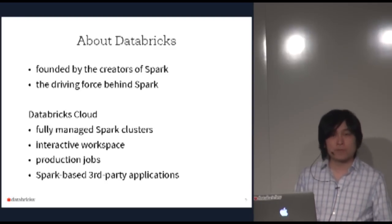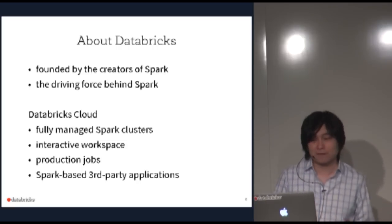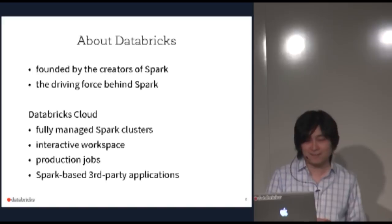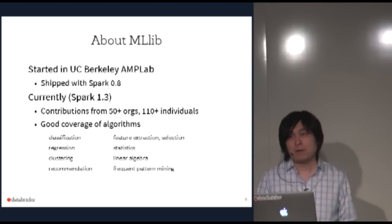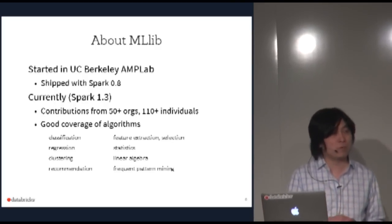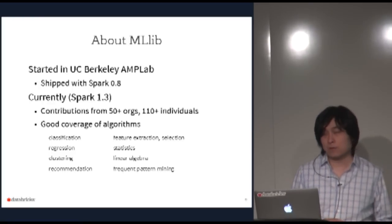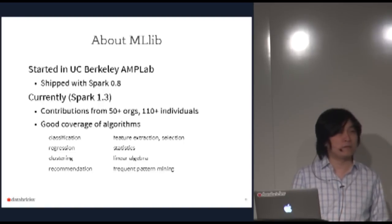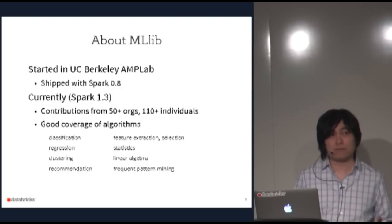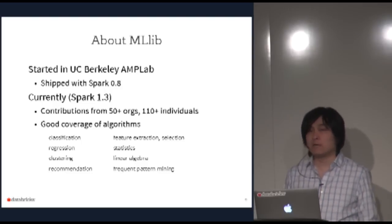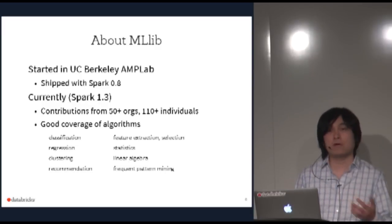We will have a small demo today. We are also hiring, so if you want to move to San Francisco, let us know. Now let's talk about MLlib. MLlib is initially from Berkeley AMPLab, the same place Spark was born. It shipped with Spark as a standard component in version 0.8 and now we're at 1.3 — about one and a half years old. It's very young but very active, with contributions from more than 50 organizations and more than 100 contributors.